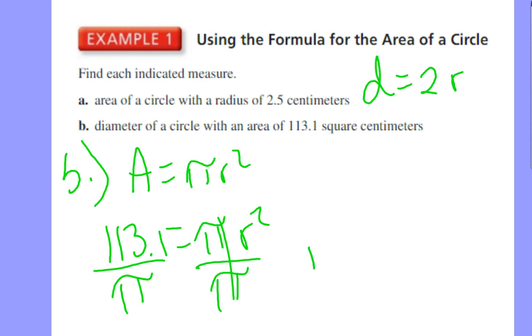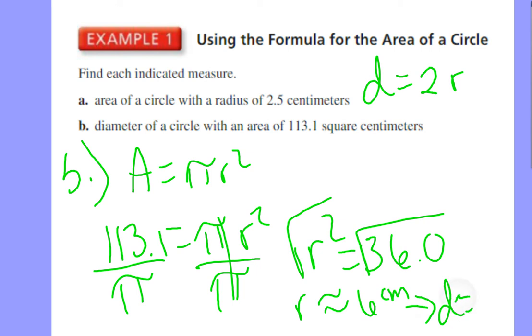We get that r squared is going to equal 36.0. And then so we square root, and then r is going to approximately be about 6 centimeters. So that means that the diameter is going to approximately be about 12 centimeters.